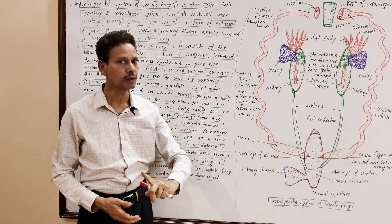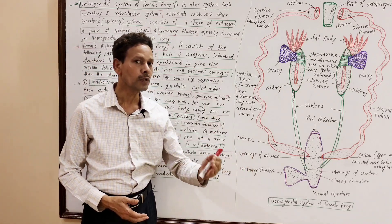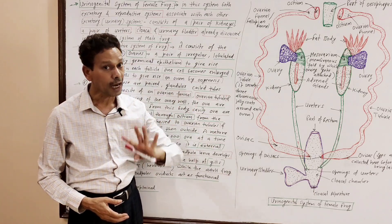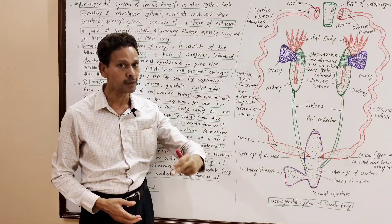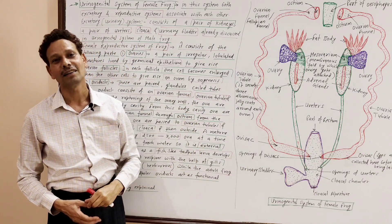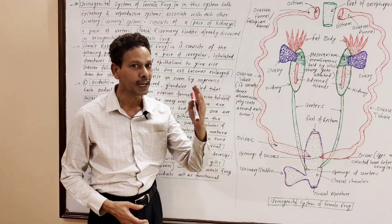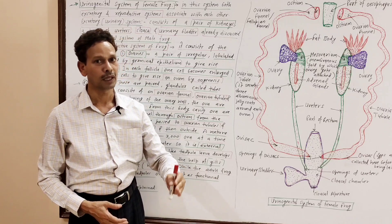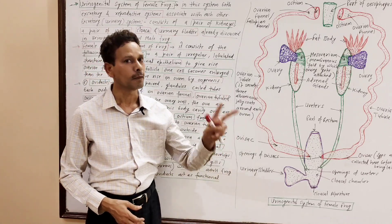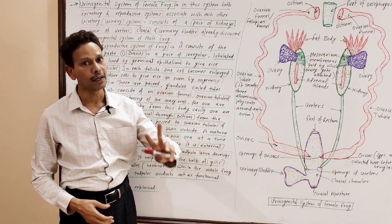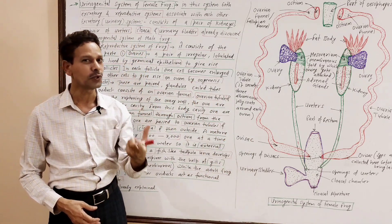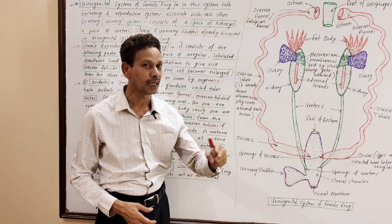In our last lecture, we discussed the urinogenital system of male frog. Urinogenital means both systems: urinary and genital — that is, excretory and reproductive system. In the case of frog, these two systems are closely associated, and they collectively constitute a system called the urinogenital system.